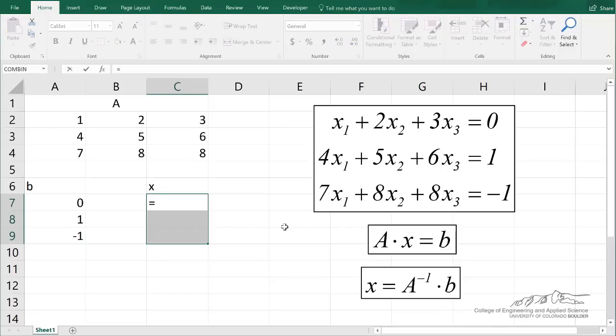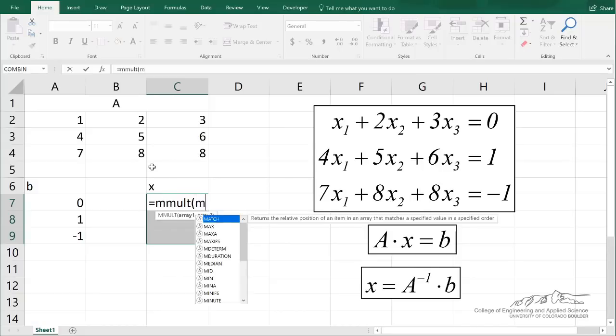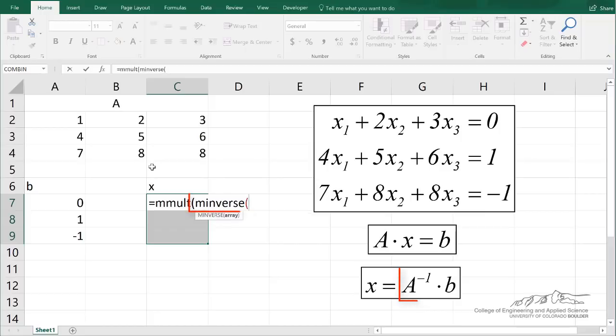And I'm going to go equals MMULT. So there's a built-in function. And what we're trying to multiply is the inverse of A times b. So I have to here calculate the inverse of A. And I'm just going to, in one step, just use the MINVERSE function of A. So that will calculate the matrix inverse of A.